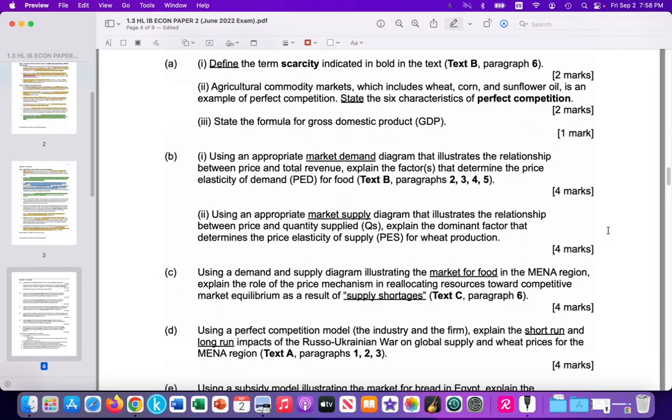And scrolling down, paper two typically starts with defining some key terms. In this case, defining scarcity, describing the characteristics of perfect competition, stating the formula for GDP. I don't have any quantitative questions in this paper two. But on paper two, you would have quantitative questions. And for this video, we're going to focus on this question right here. It says, using an appropriate market demand diagram. So the diagram we're drawing just needs to illustrate the demand curve. We don't necessarily need to show demand and supply. And illustrate the relationship between the price and total revenue in that demand curve. And explain the factors that determines the PED for food.